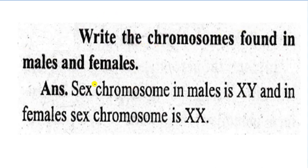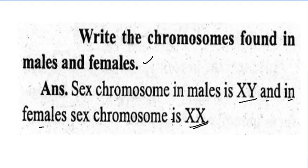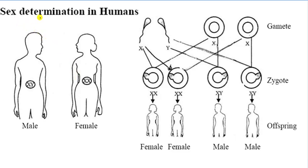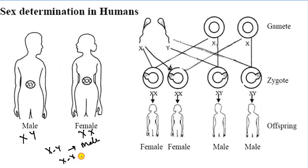Sex chromosomes in the male are XY and in the female, sex chromosome is only XX. For sex determination in humans: a male has both X and Y, while a female has only X. When X and Y combine together, they form a male. When X combines with X, it is female.